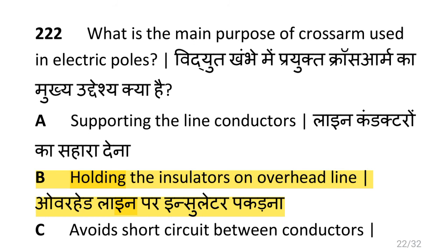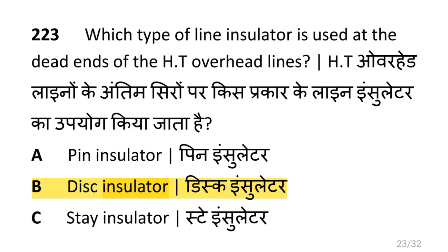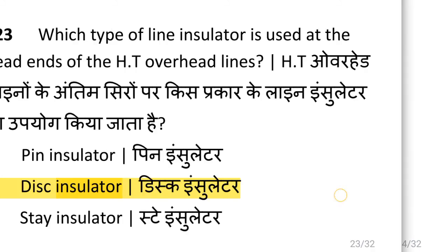What is the main purpose of cross arm used in electric poles? That is holding the insulator on overhead lines. Which type of line insulator is used at the dead ends on the HT overhead lines? That is Dix insulator.